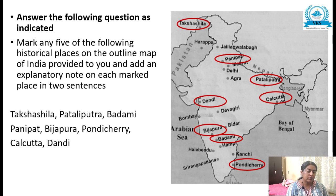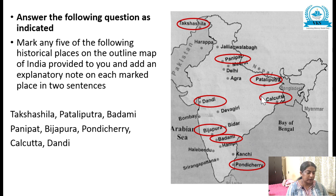Let us see the places. The first place is Takshashila — I have marked it here. Second is Pataliputra — marked here. Then Badami — marked here. Panipat — here. Then Pondicherry, Calcutta — marked here, and Dandi — here in Gujarat. This is how you mark the places: put a proper point near the location and write the place name.